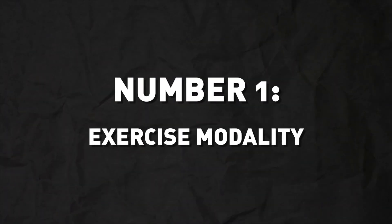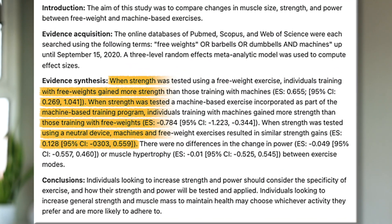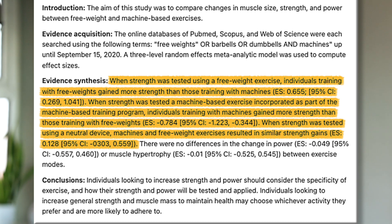Number one: specificity does seem to apply to the exercise modality. We have a meta-analysis comparing strength gains when training with free weights versus with machines. If you want to get stronger at machine work, you see greater improvements with machine training, and vice versa — if you want to get better at free weight exercises like the barbell squat, training with free weights improves strength in those exercises to a greater degree.